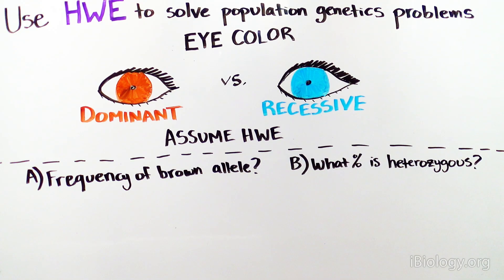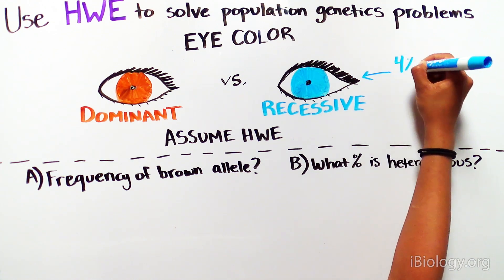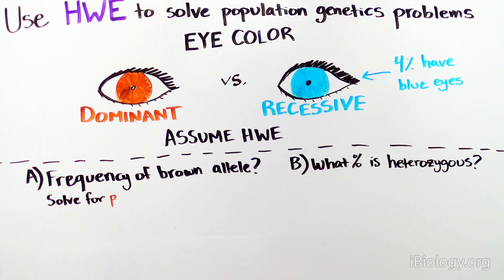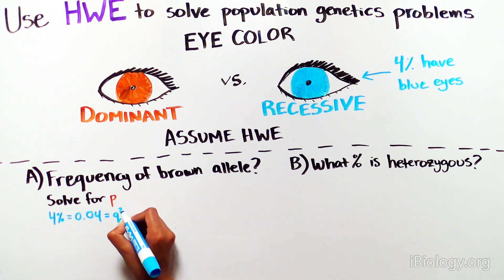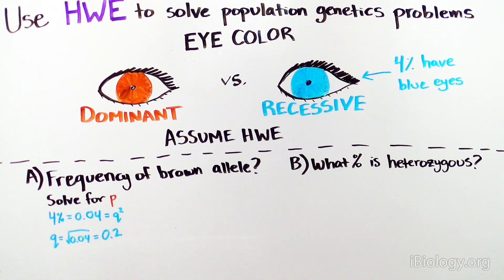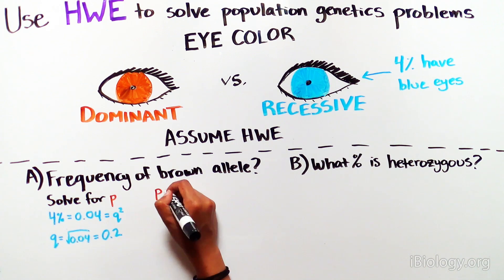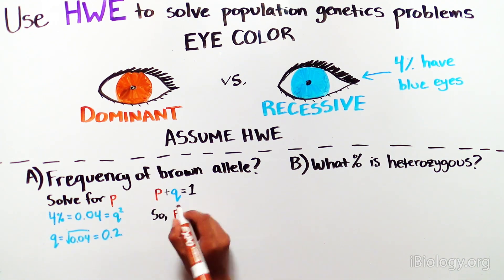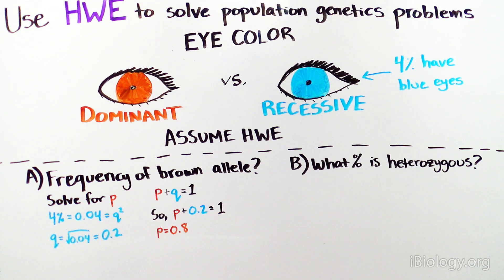Assuming the population follows Hardy-Weinberg equilibrium, let's solve A and B. To solve A, we start with the information that 4% of the population has blue eyes. This is telling you the frequency of the recessive genotype, so 0.04 equals Q squared. We can solve for Q — the frequency of the recessive allele — which is 0.2. Therefore, given that P plus Q equals 1, we know that P equals 0.8. This is the allele frequency of brown eyes.